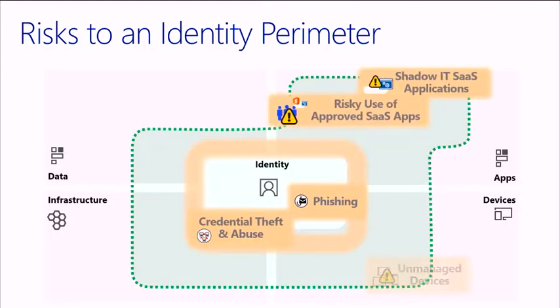Going deeper into this identity perimeter: traditionally, identity was just a user ID. Today, identity is not just who the user is — identity includes applications, data, and devices, because everything that is able to access your applications is an identity. All of those should be involved in the decision of whether this is the person they claim to be and should they have access. Not only does each element have its own identity, but you need all that context when making a decision: Are they logging in from where they're supposed to be, with a trusted device, with the right password and multi-factor? All of these contribute to strong authentication and authorization mechanisms.